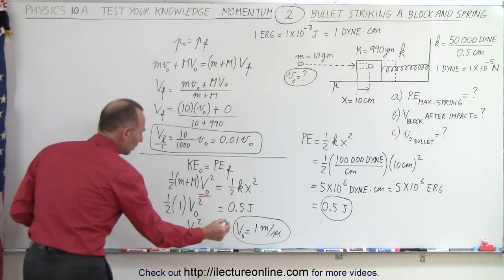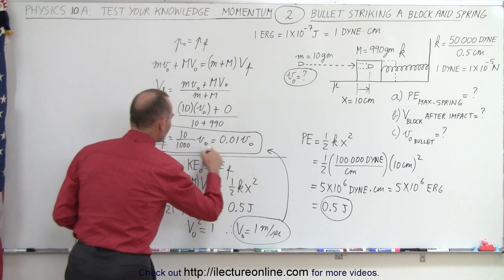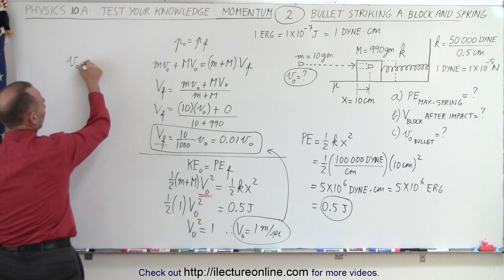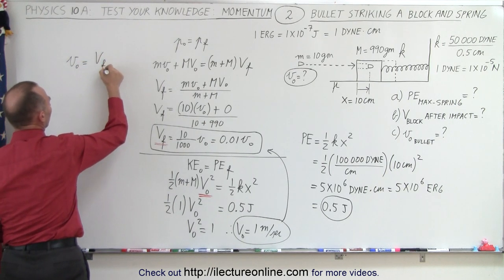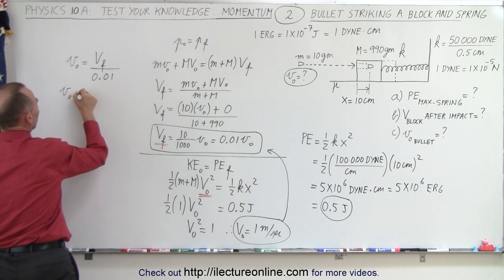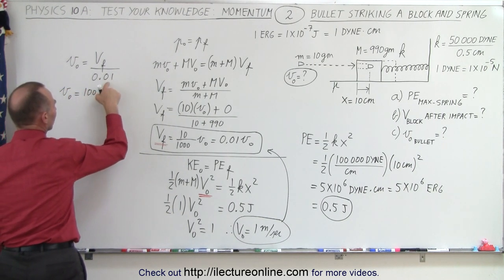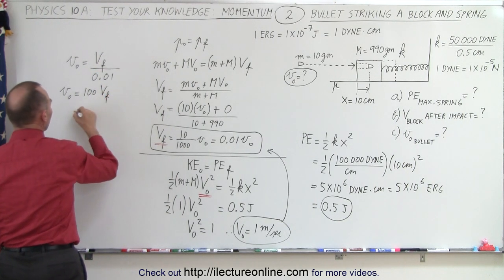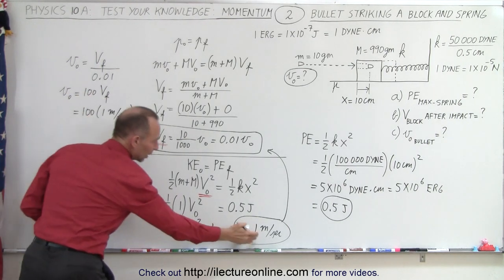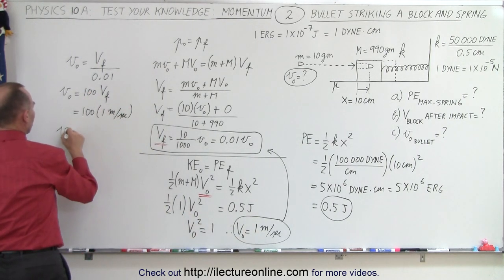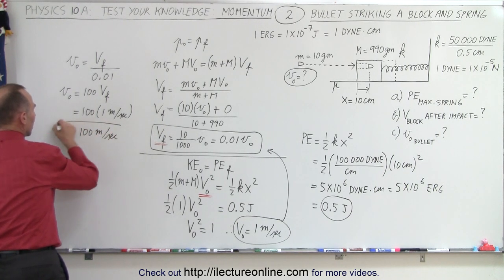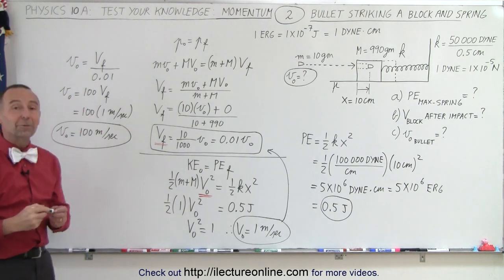Finally, we can find the initial velocity of the bullet. We have v_final of the block equals 0.01 times v_initial of the bullet, so v_initial of the bullet equals v_final divided by 0.01, which is the same as multiplying by 100. That's 100 times 1 meter per second, so the initial velocity of the bullet is 100 meters per second. And that is how we solve the problem.